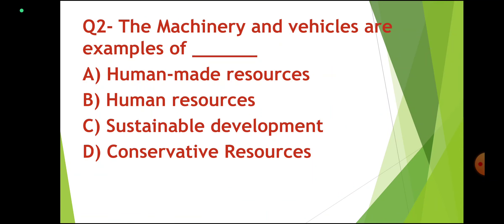Question number 2: Machinery and vehicles are examples of — Human-made resources, Human resources, Sustainable development, or Conservative resource. Correct answer: Human-made resources.